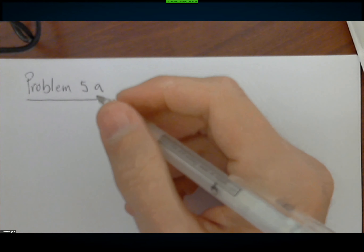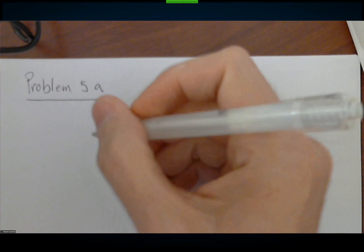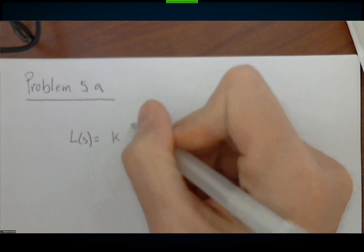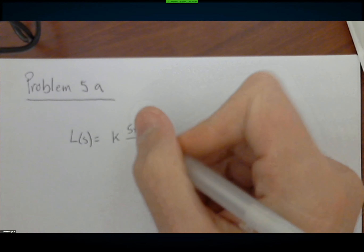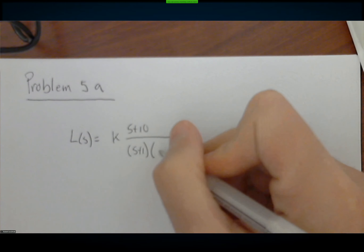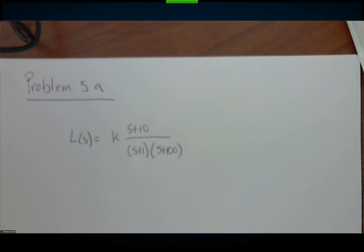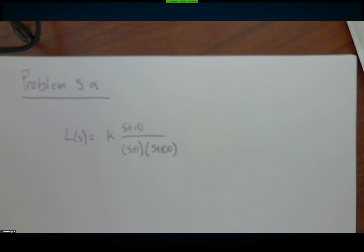I wanted to try some more Nyquist because it seems like there was some confusion. So instead of giving you solutions to problem set five, I'm going to do a video solution — I thought that might be easier to talk through. Let's look at problem 5A and 5B, because those are good ones to look at. L of s in that case is K times (s+10) over (s+1)(s+100). Now we have to draw the Nyquist plot.